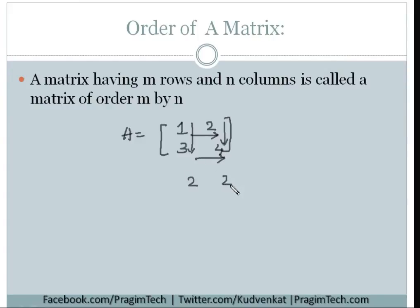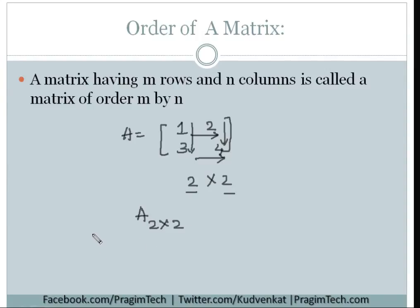So matrix A has two rows and two columns, and its order is represented as 2 by 2. The first number represents the number of rows and the second number represents the number of columns. This is called the order of the matrix. I hope the applications and the definition of matrix are clear for you.